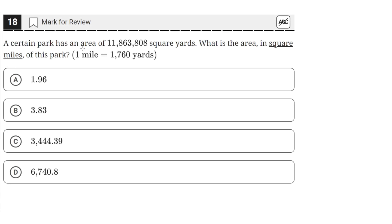A certain park has an area of 11,863,808 square yards. What is the area in square miles of this park? One mile is equal to 1,760 yards. So the area of this park is this large number in yards, and we need to convert that into square miles.